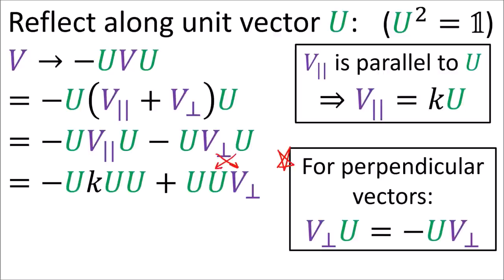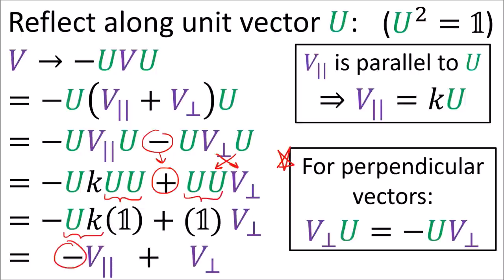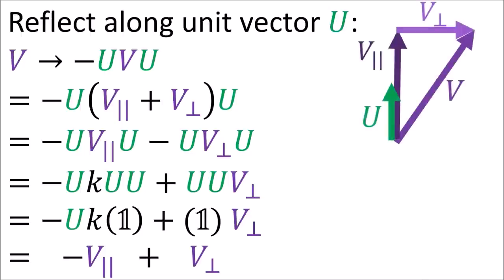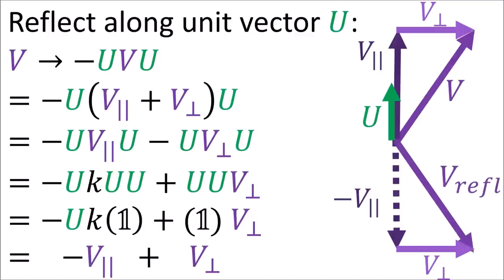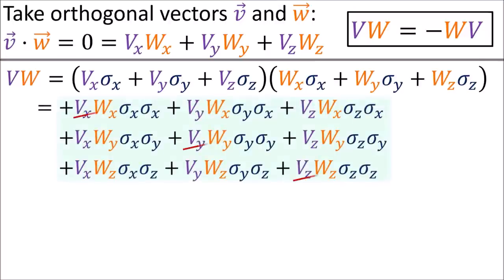The parallel part would just be u scaled by some factor k. For the perpendicular vectors, it turns out we can swap their order if we pick up a negative sign. We can collapse these products to identities and rewrite u times k as the parallel portion of v. So we see that the portion of v that's parallel to u has been reversed, while the perpendicular part has been left unchanged—this is exactly what we want for reflections. To prove this anti-commuting property for perpendicular vectors, you can pause the video and look at these slides.